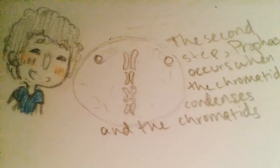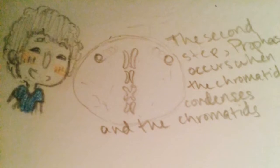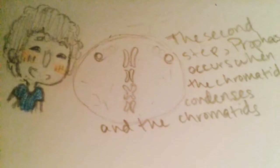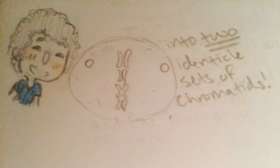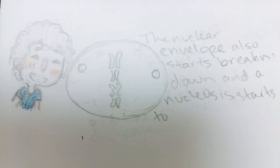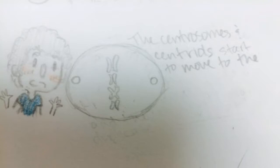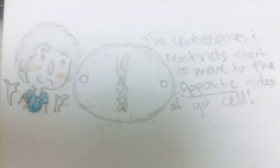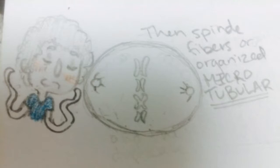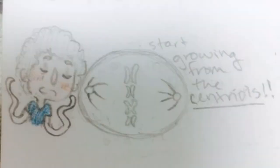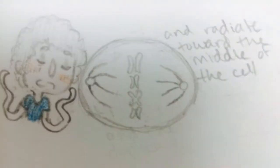The second step, prophase, occurs when the chromatin condenses and the chromatids duplicate into two identical sister chromatids. The nuclear envelope also starts breaking down and the nucleolus starts to disappear. The centrosomes and centrioles start to move to opposite sides of your cell. The thin spindle fibers, or organized microtubules, start growing from the centrioles and radiate toward the middle of the cell.